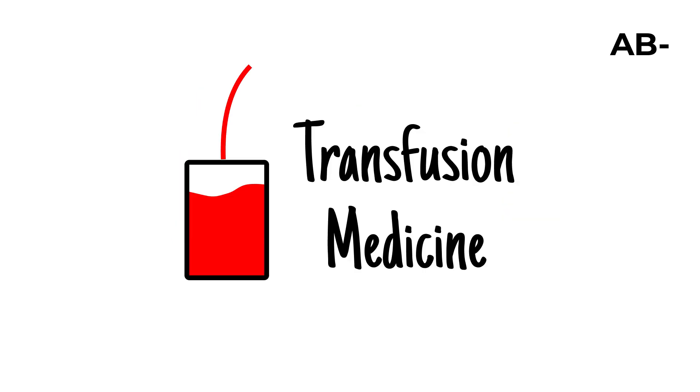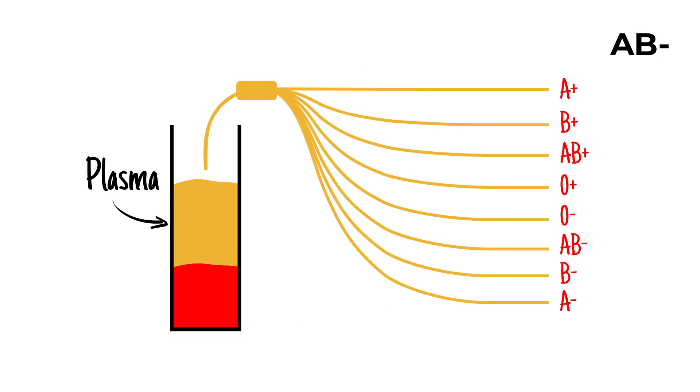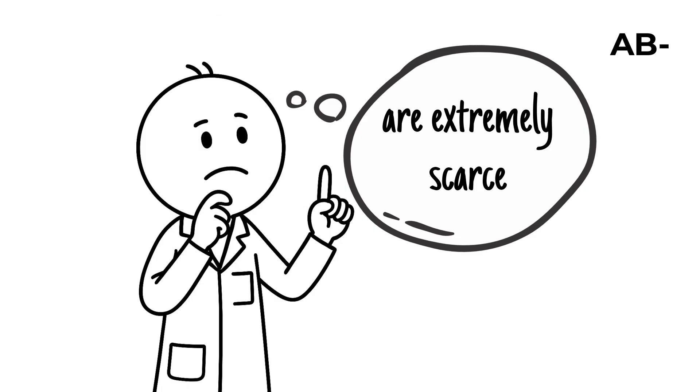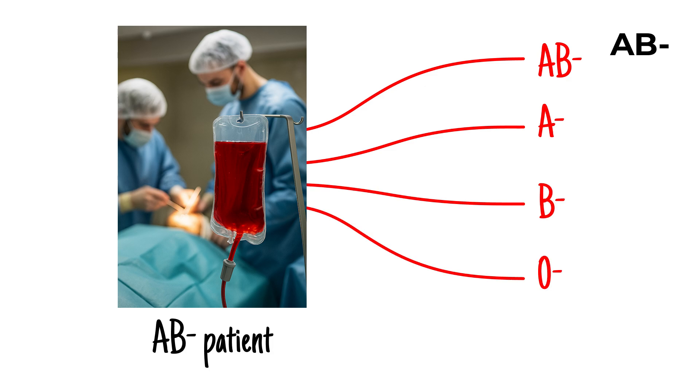In transfusion medicine, AB negative plasma is uniquely valuable, as it can be given to recipients of any blood type, earning it the title of universal plasma donor. However, AB negative red cells are extremely scarce, and individuals with this type can receive blood only from AB negative, A negative, B negative, or O negative donors.